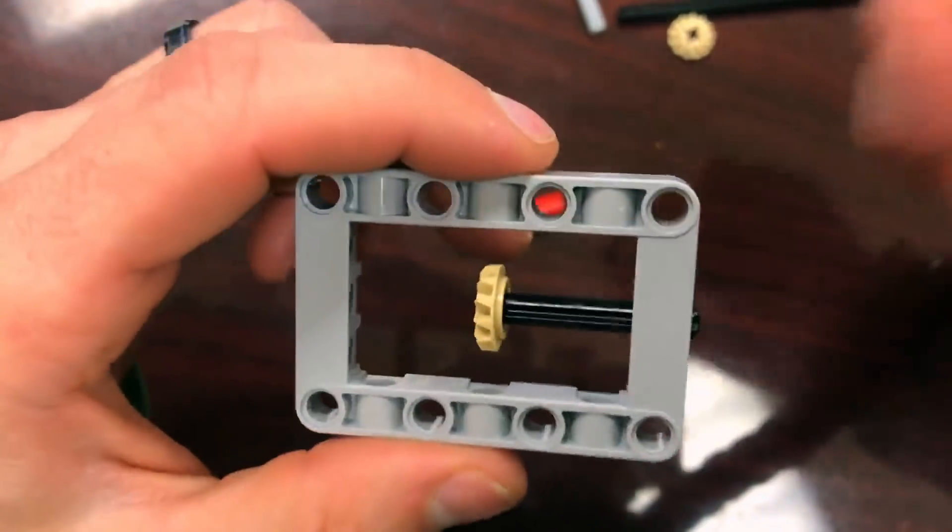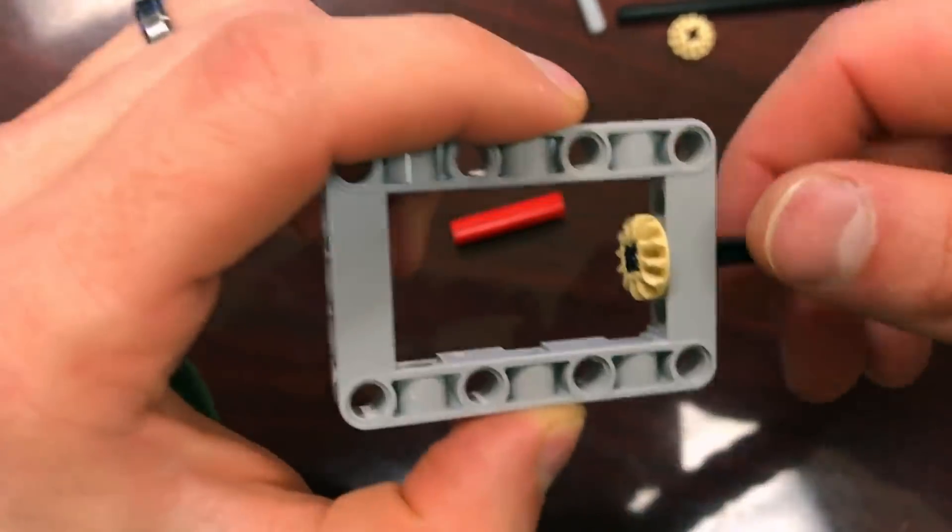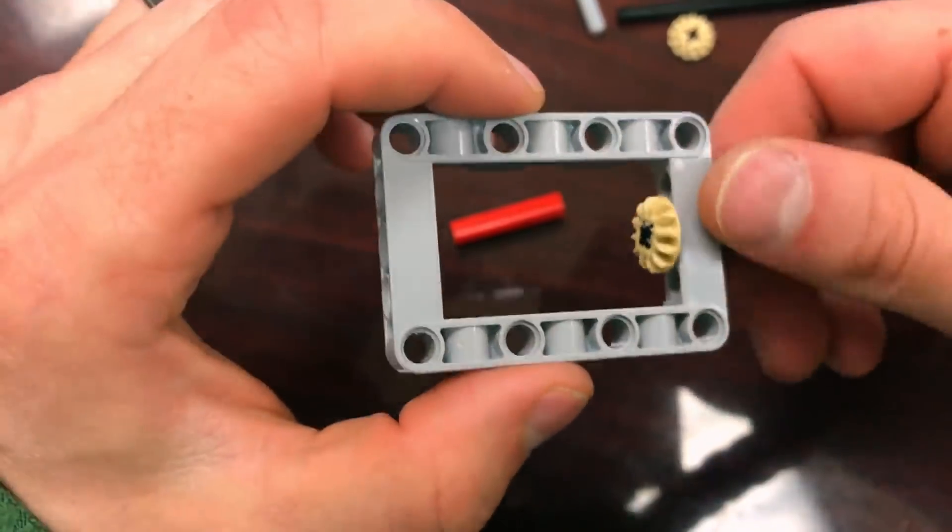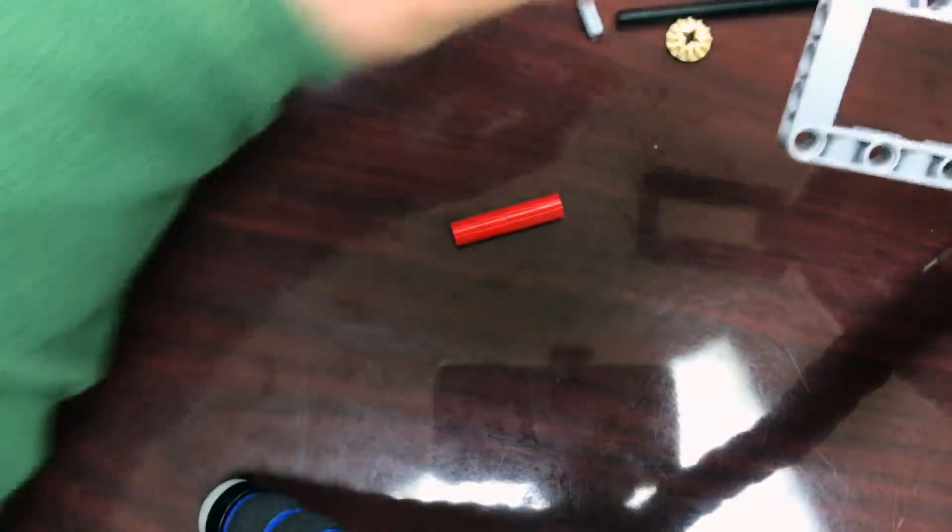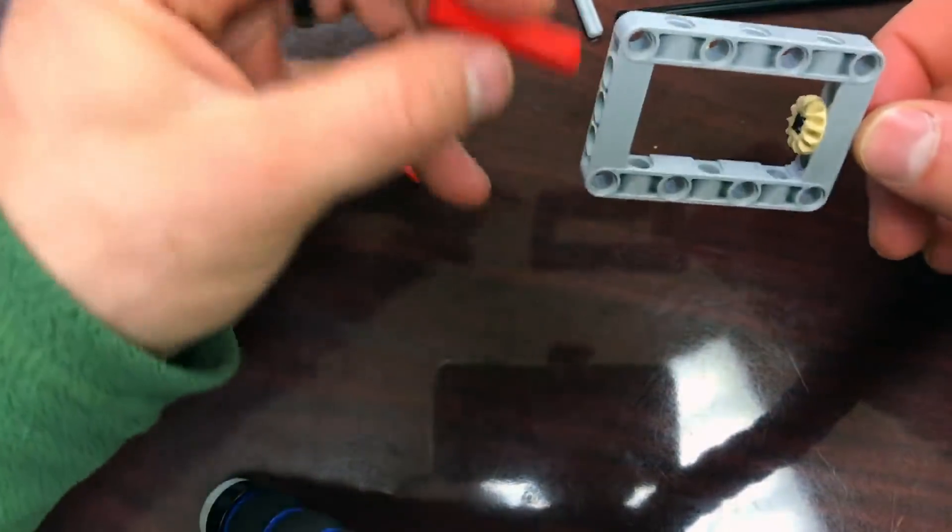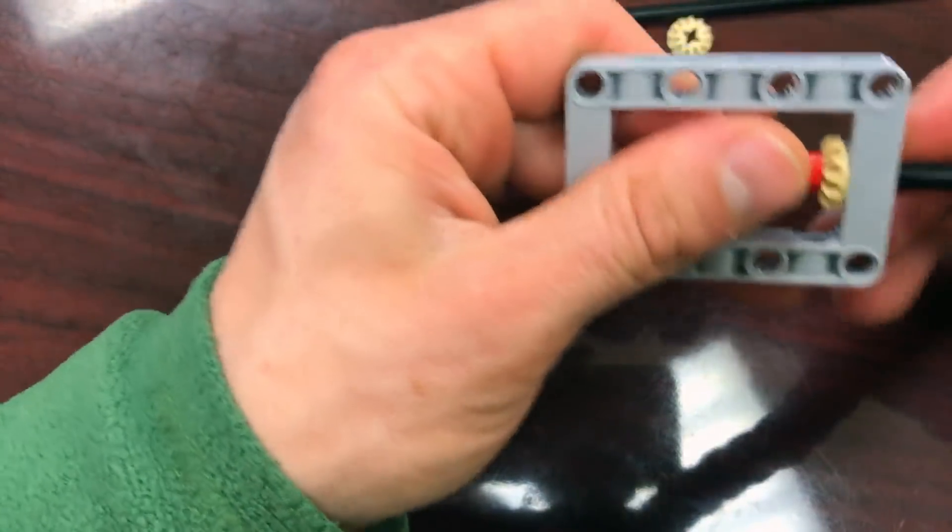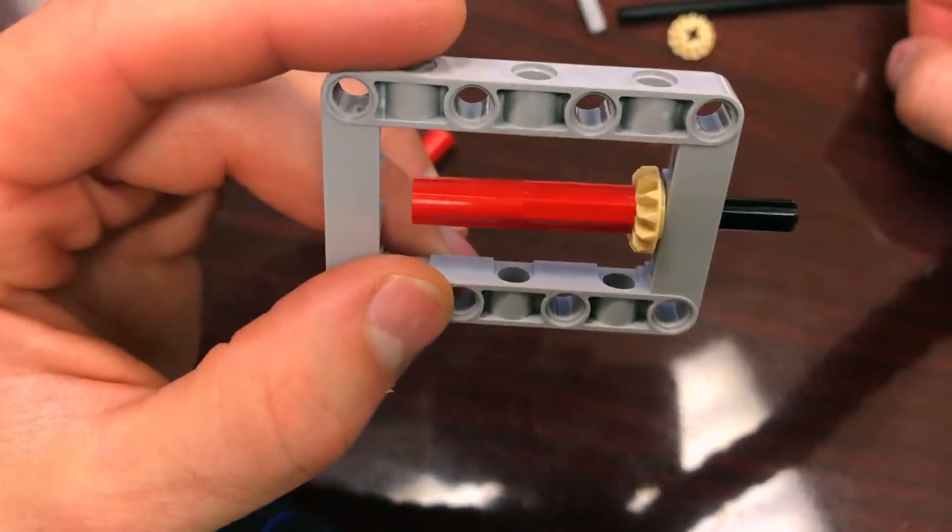If the gear is facing the other way then it will not bite with the other gear that it's attached to on the motor. Then I'm going to take the axle couplings that I put together and put them in there.